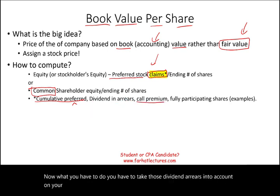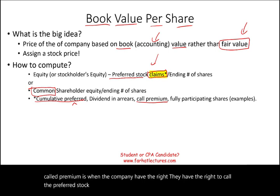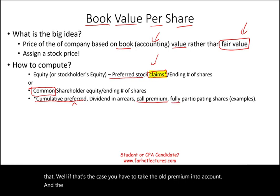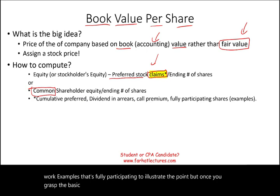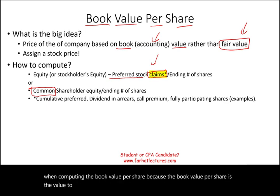Sometimes there's a call premium — when the company has the right to call the preferred stock and usually pays a premium above par. If that's the case, you have to take that call premium into account. Preferred stock could also be fully participating or not fully participating. The key idea is that you must take out the preferred stock claims when computing book value per share, because book value per share represents value to the common stockholders.